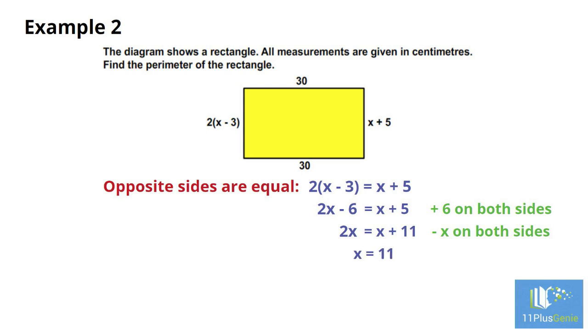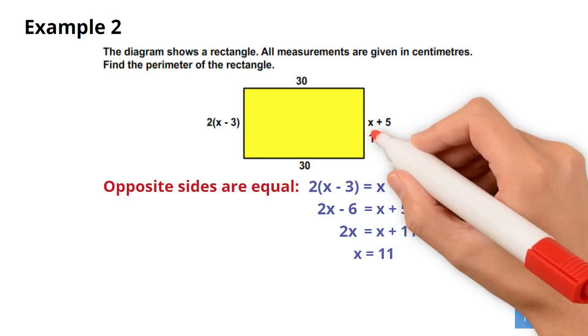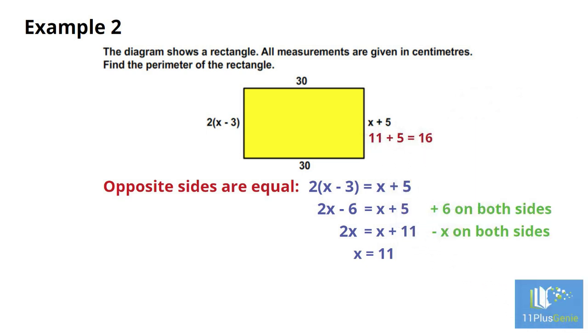Use x equals 11 to calculate the length of the two sides. Each of the sides is 16 centimeters. The perimeter of the rectangle is 30 plus 30 plus 16 plus 16, which equals 92 centimeters.